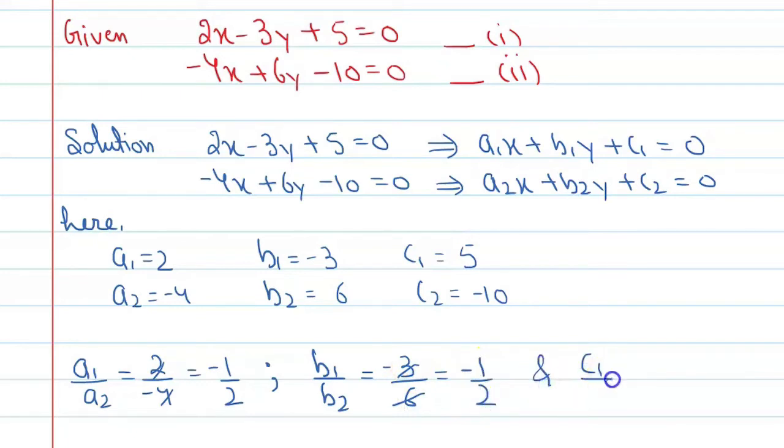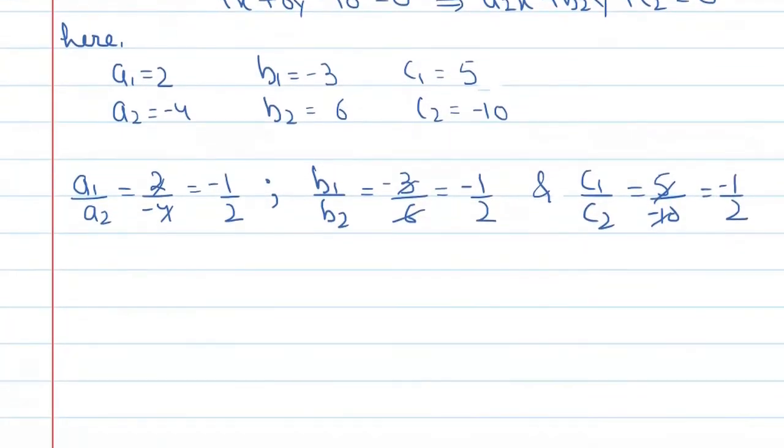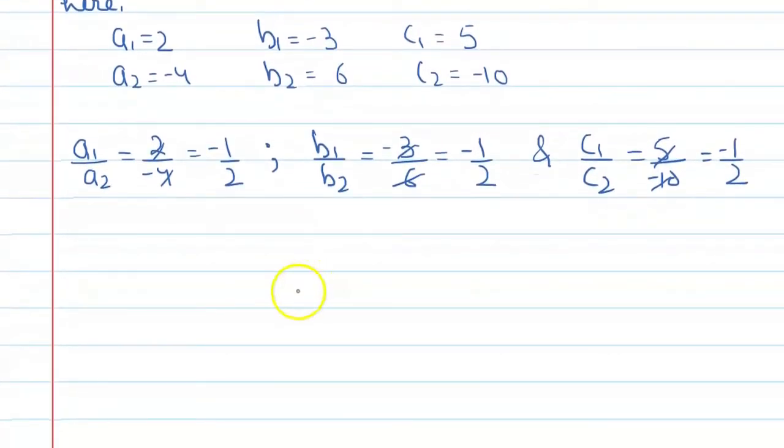Last, that is c1 upon c2. Here you can see it is 5 upon minus 10, so the value will become minus 1 by 2. So you can observe that here a1 upon a2 is equal to b1 upon b2 is equal to c1 upon c2.